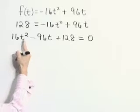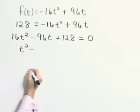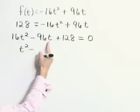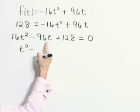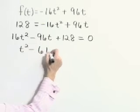16t² divided by 16 is t². That minus 96t divided by 16 is minus 6t, and 128 divided by 16 is 8, giving us t² - 6t + 8 = 0.